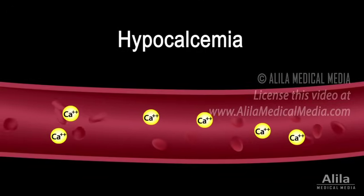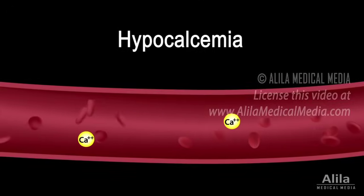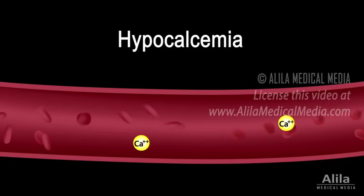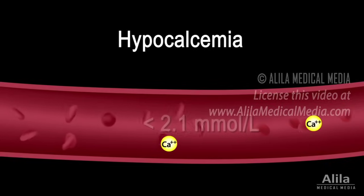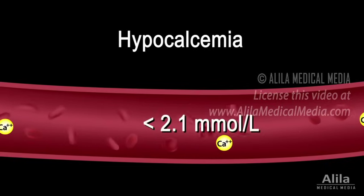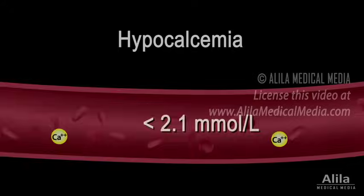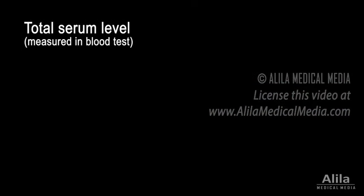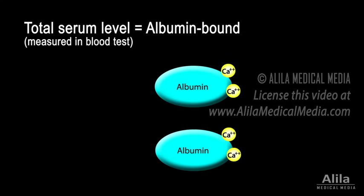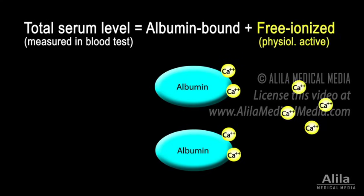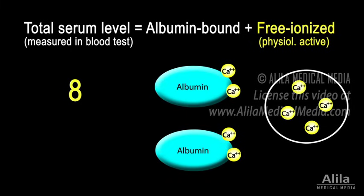Hypocalcemia refers to abnormally low levels of calcium in the blood and is generally defined as serum calcium level lower than 2.1 millimoles per liter. Because the total serum calcium includes albumin-bound and free ionized calcium, of which only the latter is physiologically active, calcium levels must be corrected to account for albumin changes.